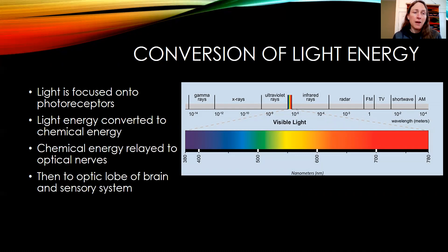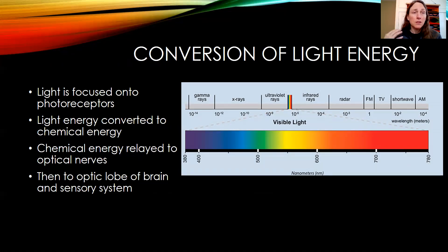The chemical energy is relayed to optic nerves, and that optic lobe of the brain is connected with the sensory system. That information comes into the brain and allows the organism to react.